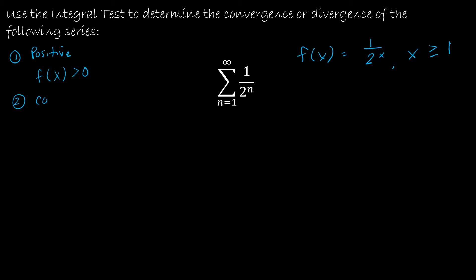Second, is it continuous? The only way it would not be continuous is if 2ˣ equaled 0, which doesn't happen for x ≥ 1, so f(x) is continuous. Third, is it decreasing? We should check f′(x) to confirm.